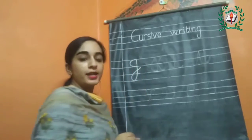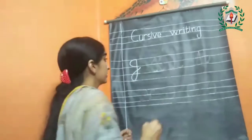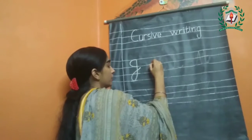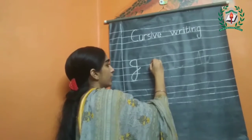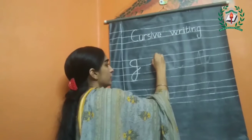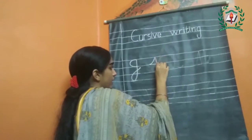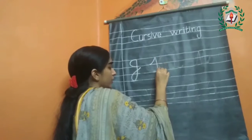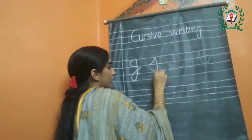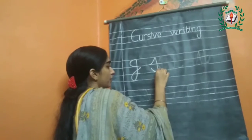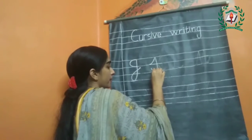Now the next letter is K. Make a slanting line with a slight curve, starting from the head line and touching to the upper line. Now make a standing line ending with a curve touching to the baseline.